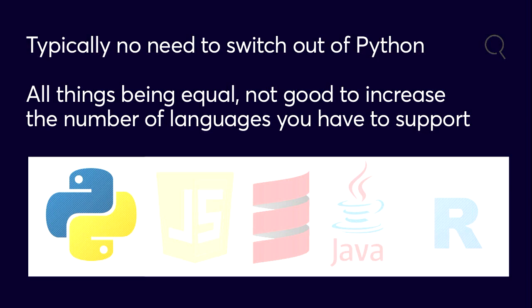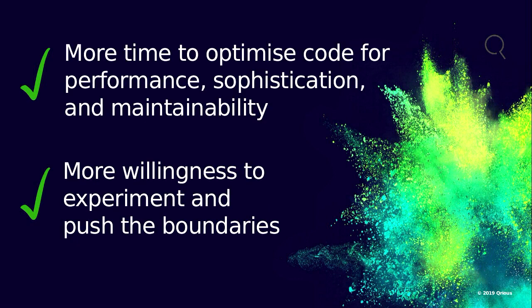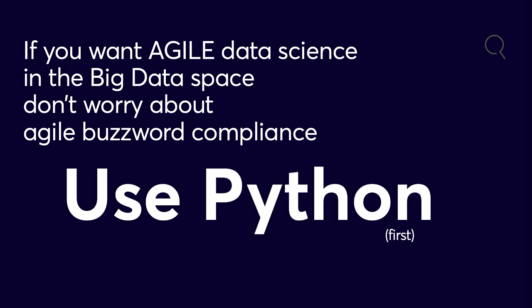It's not good to increase the number of languages you need to support in your organization — the guy who knew Scala well, we've got one left but he's busy and the other one left. So there's no waiting for code to be ported into Scala or Java. Our data scientists can share a git repository with the big data engineers and the architecture and engineering team — one Python codebase to rule them all. We can do pull requests, code reviews, and that leaves a lot more time to optimize for performance, sophistication, and maintainability. There's much much more willingness to experiment and push the boundaries now. So if you want agile data science in the big data space, don't worry about agile buzzword compliance — use Python.